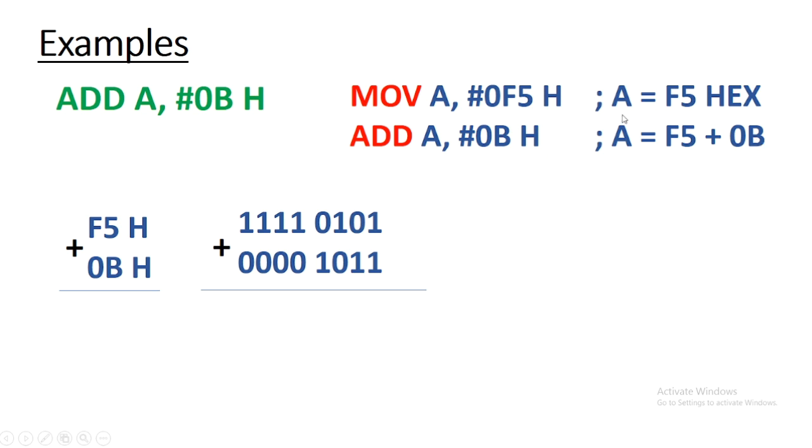Accumulator already contains F5H, and then I want to add 0BH into accumulator. After addition, A will be holding the result. F5H and 0BH are converted into binary, and after addition, the result would be like this.